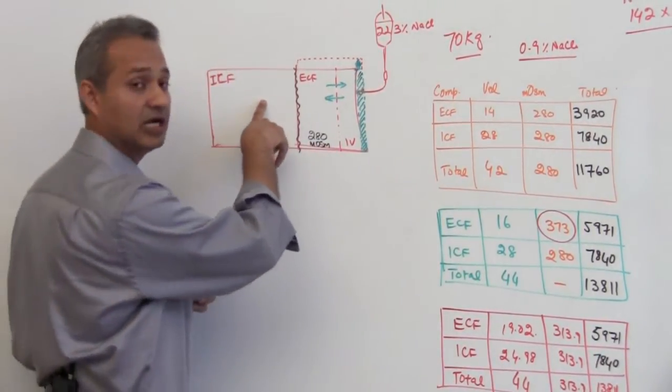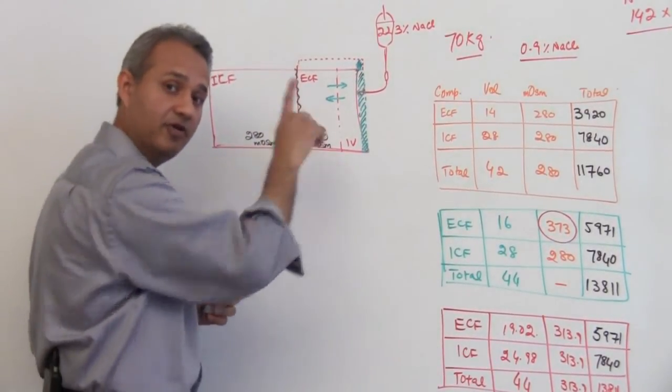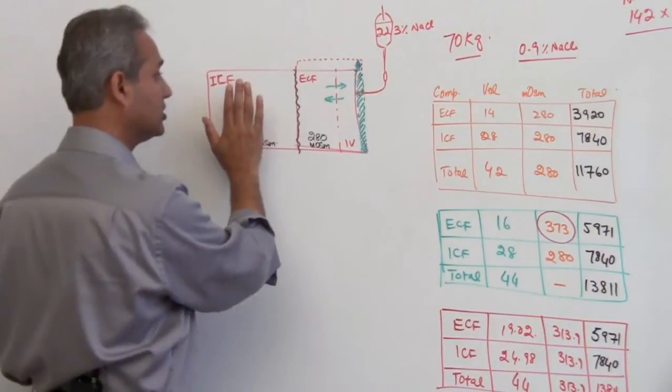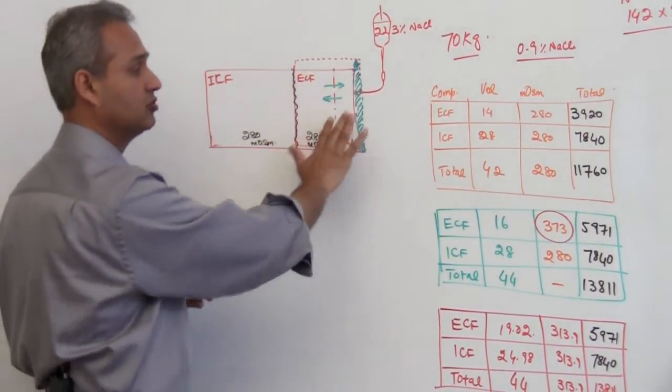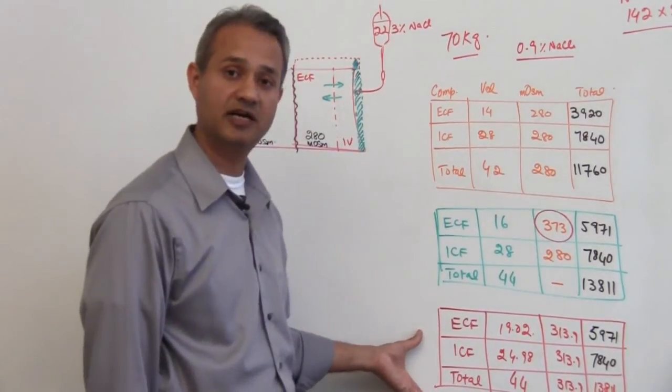What do you think would happen? Water is going to move from higher concentration to the lower concentration. But how do we mathematically represent that?